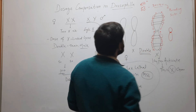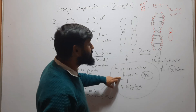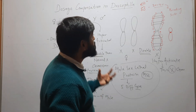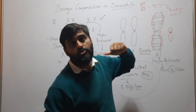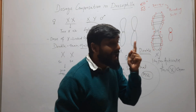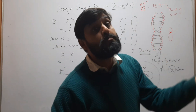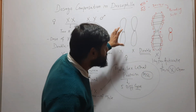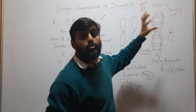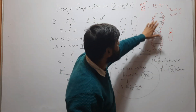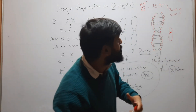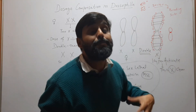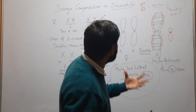So the X chromosome in males becomes hyperactive and works double. This is done by the Male Sex Lethal protein, a complex of five different genes. This protein has binding sites on the X chromosome of the male only — it will not bind to the X chromosome of the female. It has 30 to 40 binding sites, spreads to the whole chromosome, and makes it hyperactive so it works double.